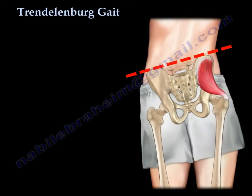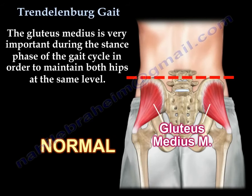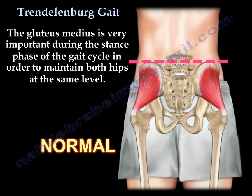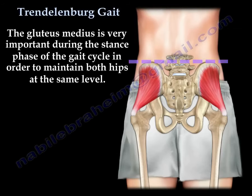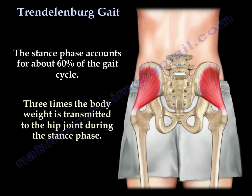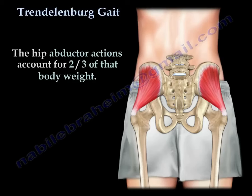The gluteus medius is very important during the stance phase of the gait cycle in order to maintain both hips at the same level. The stance phase accounts for about 60% of the gait cycle. Three times the body weight is transmitted to the hip joint, and the hip abductor actions account for two-thirds of the body weight.